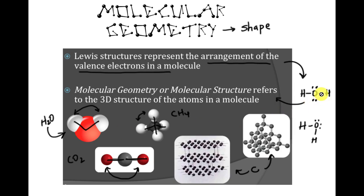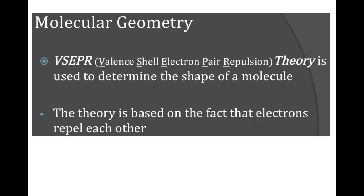If I look at my molecule for water drawn with the Lewis structure, because these are electrons and these are electrons, they're going to repel each other a little bit, and we're going to end up with this bond angle. I have an animation I'm going to show you, and I'll actually have models in class that will help you understand this as well.